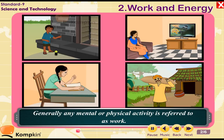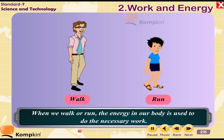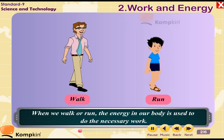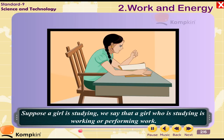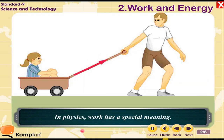In general, any mental or physical activity is referred to as work. When we walk or run, the energy in our body is used to do the necessary work. Suppose a girl is studying — we say she is performing work, but that is mental work. In physics, work has a special meaning.